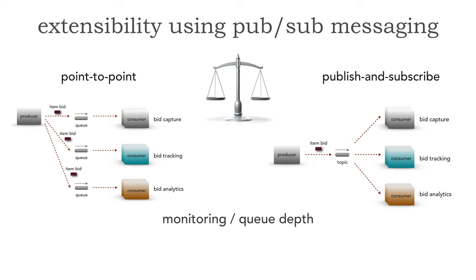The third trade-off is monitoring and queue depth, which is related to auto-scaling based on a supervisor-consumer pattern covered in a prior lesson. In point-to-point messaging with queues, I can monitor that queue depth — if we have too many messages pending, I can increase the number of consumers programmatically; that's what auto-scaling is about. However, on the publish and subscribe side, I do not have that ability. I can't query a topic for a queue depth, and therefore I can't monitor the topic and increase the number of capture, tracking, or analytics services. So I don't have that auto-scaling capability.